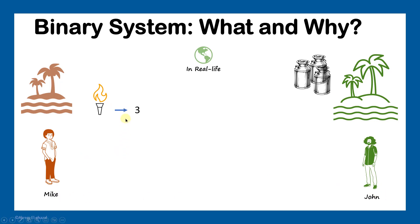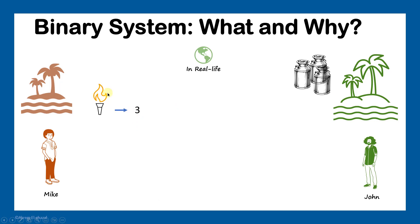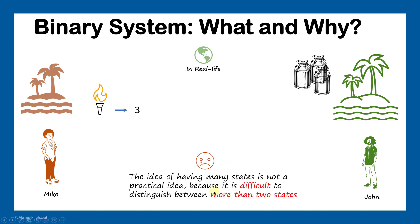Because it's going to be difficult for John to distinguish between these states — is the size of the fire normal, large, or very large? Especially if there is wind that night. The main issue is that this system has many states and it's very difficult to distinguish between them. John will make mistakes — for example, considering a fire meant for two as three. Also, if they want to extend the system to include four or five, they have to keep making the fire larger, which is not practical. So John asked Mike to come up with another idea.